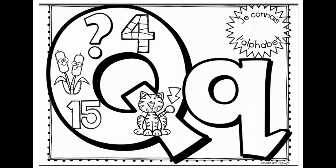So the letter Q is normally with la lettre U. They go together to make the K sound.